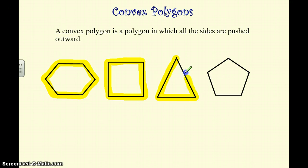And then we have finally a pentagon and all the sides are pushed outward. So convex, a polygon in which all the sides are pushed outward.